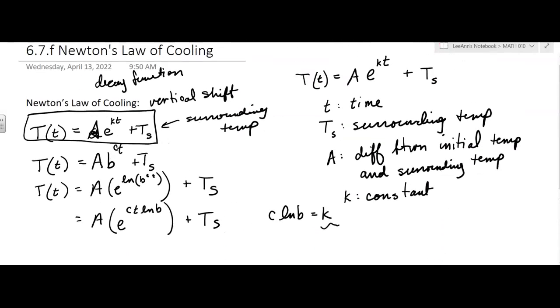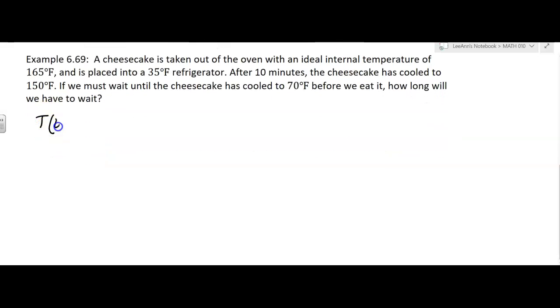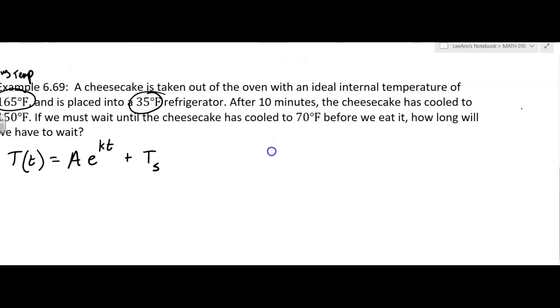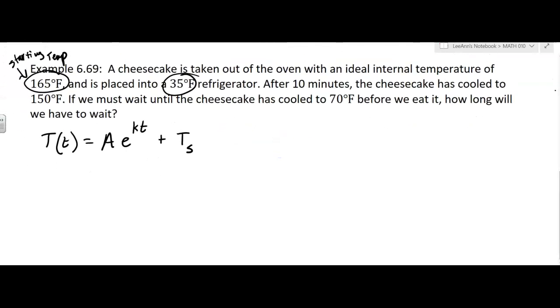Now here comes our problem. A cheesecake is taken out of the oven with an ideal internal temperature of 165. That's the initial temperature, the starting temp. It's placed in a 35 degree refrigerator. That's going to be the T_S. So now we know what A is. A is going to be the difference between those two temperatures, so A is 130. We probably don't know K and have to figure it out.